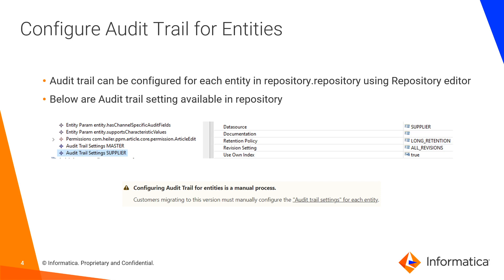To switch to Product 360 10.1, configuring the audit trail for entities will be a manual process. So please look at our documentation and follow the instructions on how to configure each entity's audit trail settings.